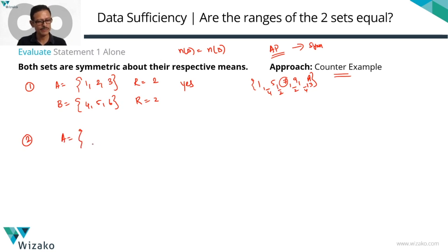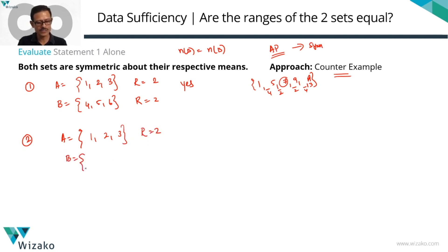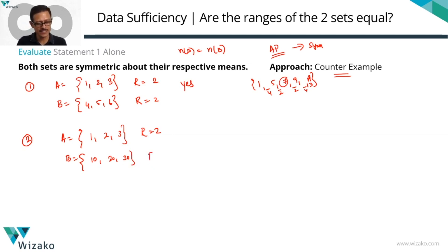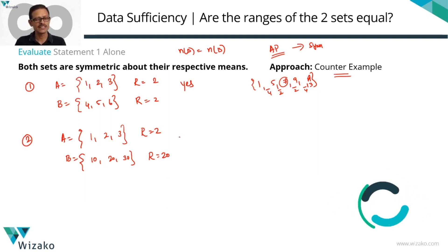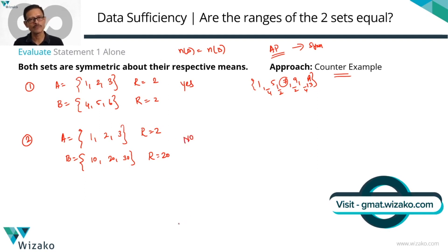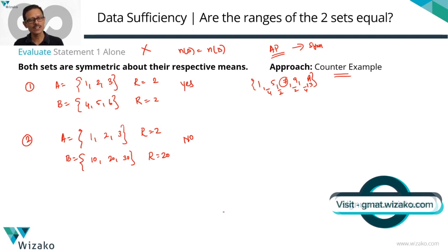I'll look for a counterexample. Let's keep A as 1, 2, 3 with range equal to 2. For set B, I'll use the same 3 elements but go with 10, 20, and 30. Is this symmetric about the mean? Definitely yes, because these three numbers are also in an AP. What's the range? The range equals 20. Both sets have the same number of elements and are symmetric about the mean, but their ranges are not the same. So the answer is no. Statement 1 alone is not sufficient. We can eliminate answer options A and D.